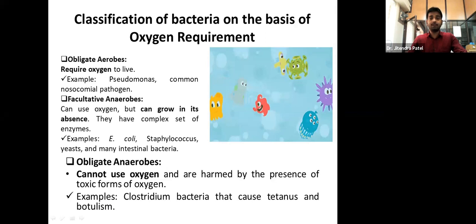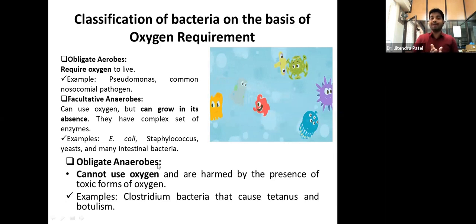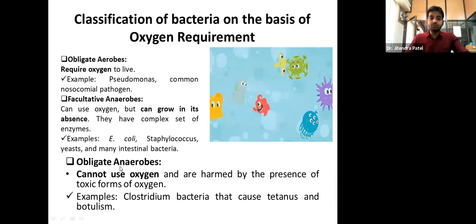Aerobes and anaerobes — you need to understand these two words carefully. In exams, you may confuse one for the other. You need to look at the spelling properly before attempting, because both have quite opposite meanings: one requires oxygen and one cannot use oxygen. With that small prefix 'an', the entire meaning changes, so be very careful.